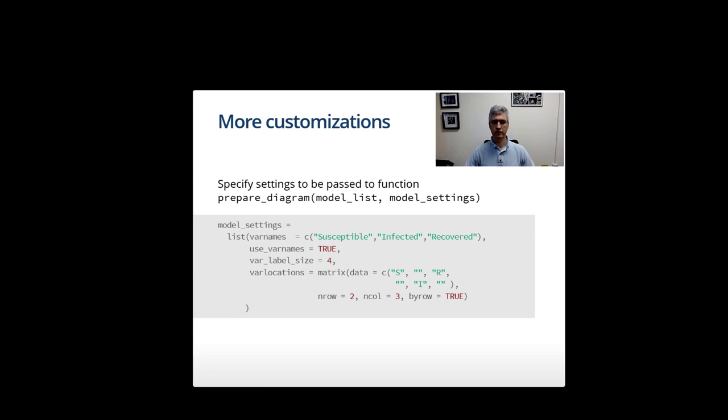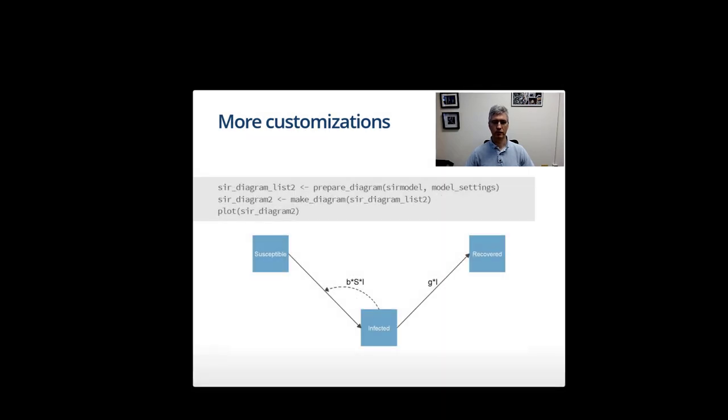You can easily do that by setting up this matrix. In this example, just to illustrate, we put S and R in a top row on the left and the right, and I below that in the middle. If you supply this to the prepare_diagram function and then call make_diagram, you get the diagram at the bottom.